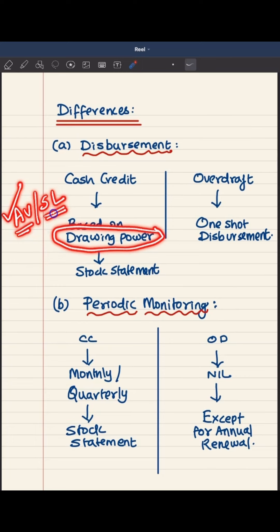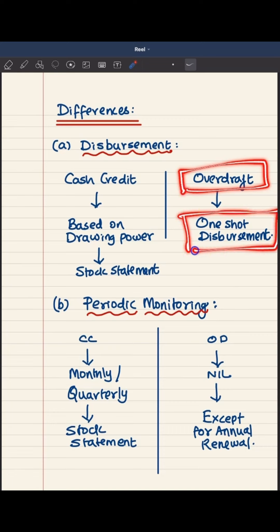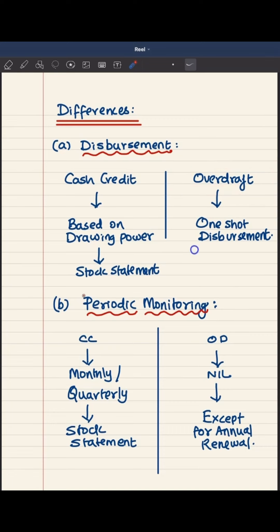And if the sanction limit is less than the advance value, then only the sanction limit will be considered as drawing power — making it very stringent. Whereas in overdraft, whatever amount is sanctioned will be disbursed in one shot to the current account of the borrower.